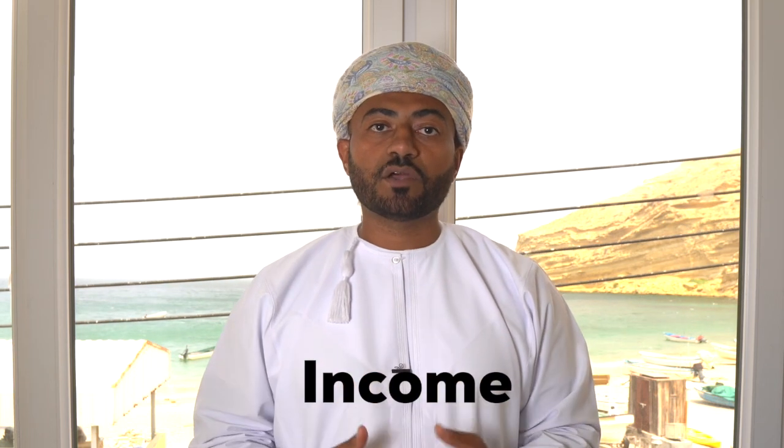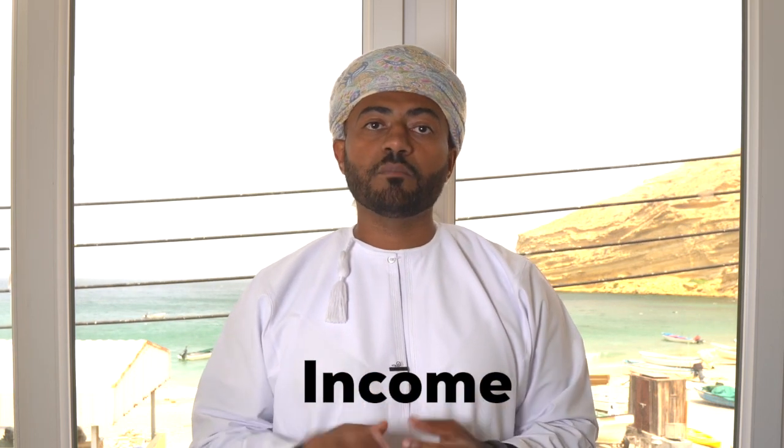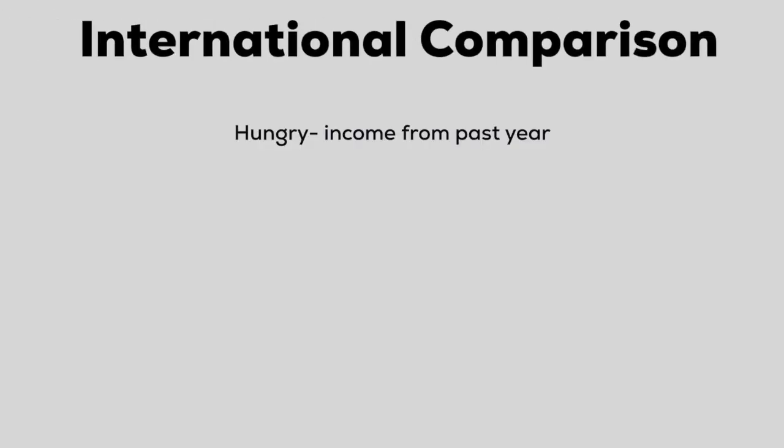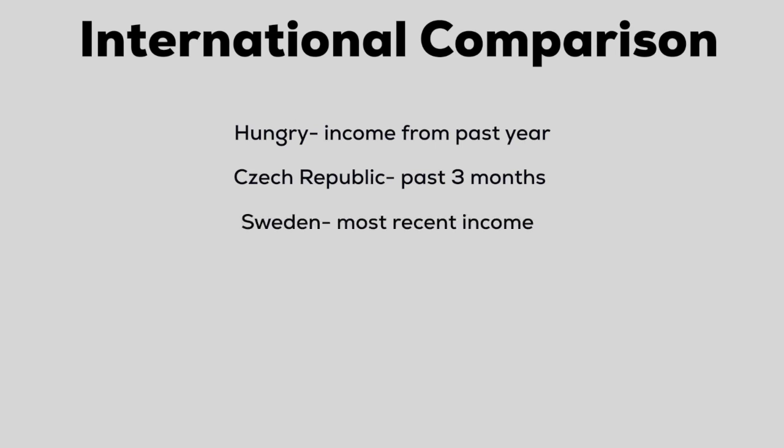When designing a UI program, you also have to decide which income you are replacing. The Omani proposal is to replace the average income of the past 24 months. The qualifying conditions or contributions vary drastically around the world. Hungary uses the income from the past year. Czech Republic uses income from the past 3 months. Sweden replaces the most recent income.